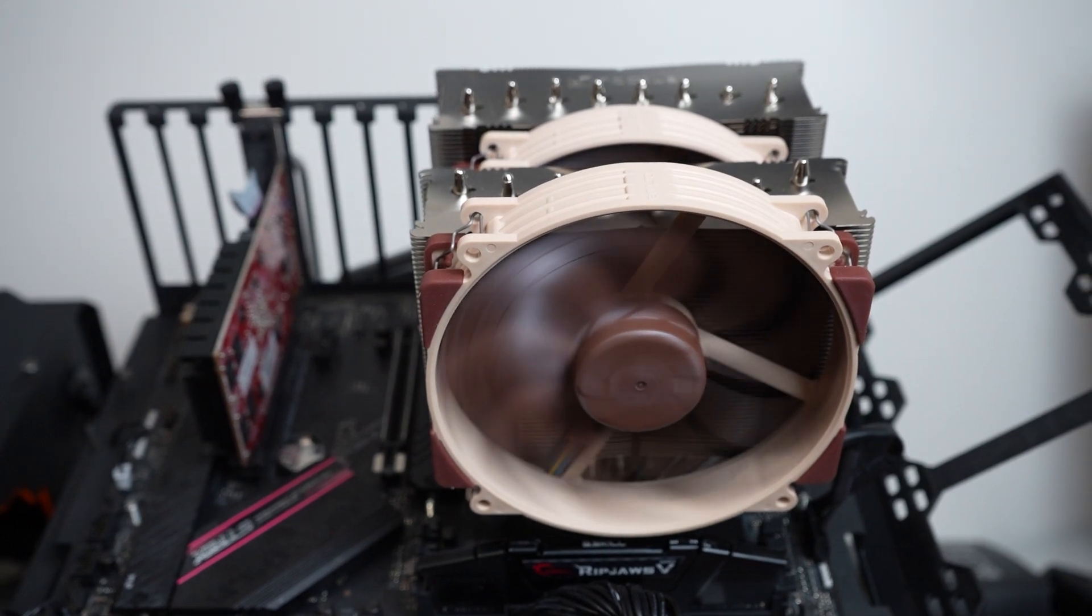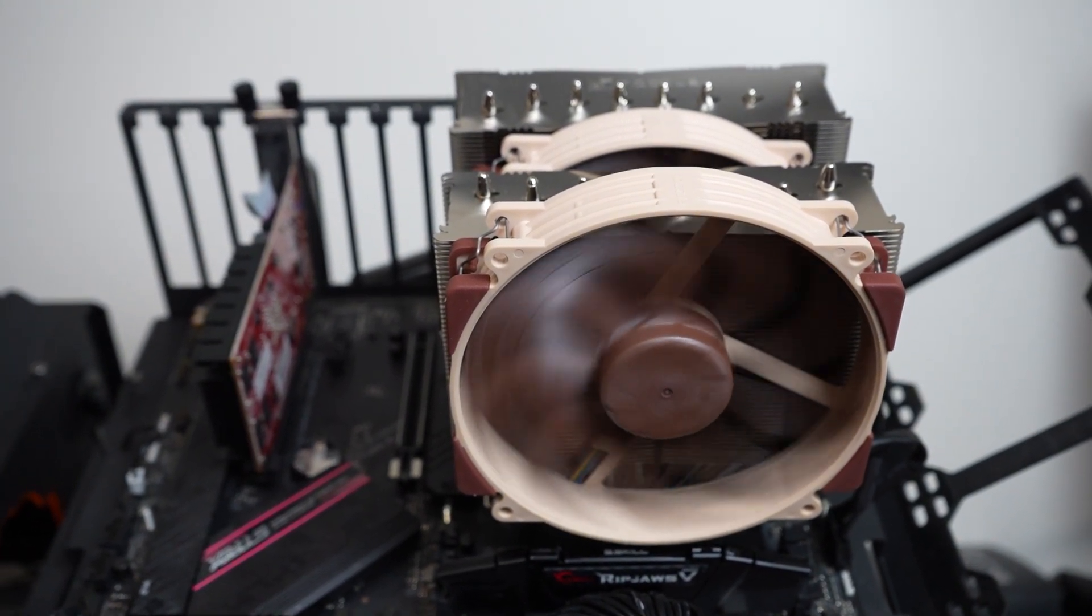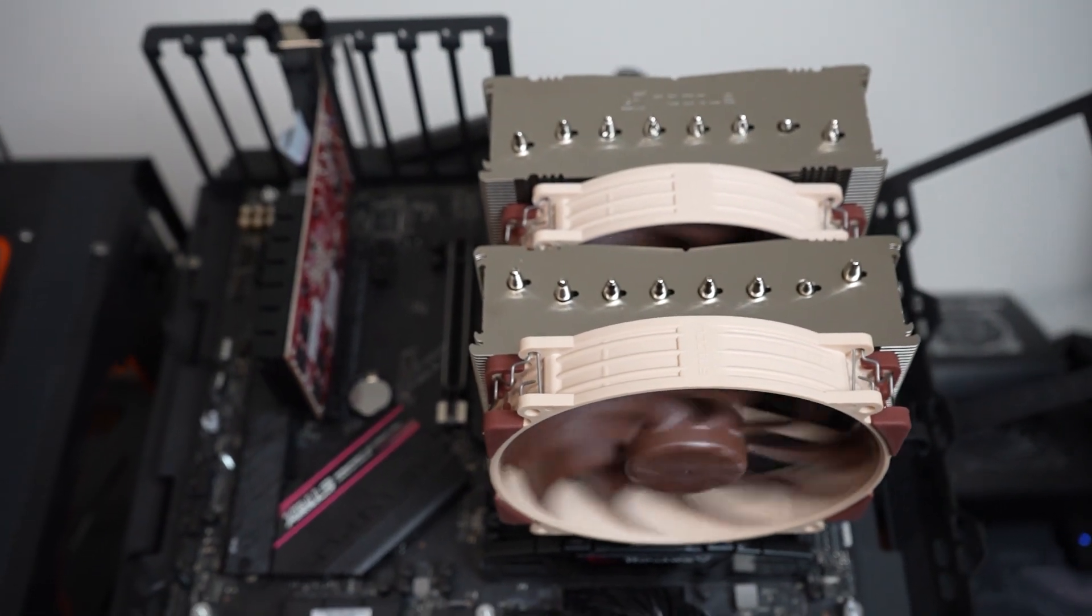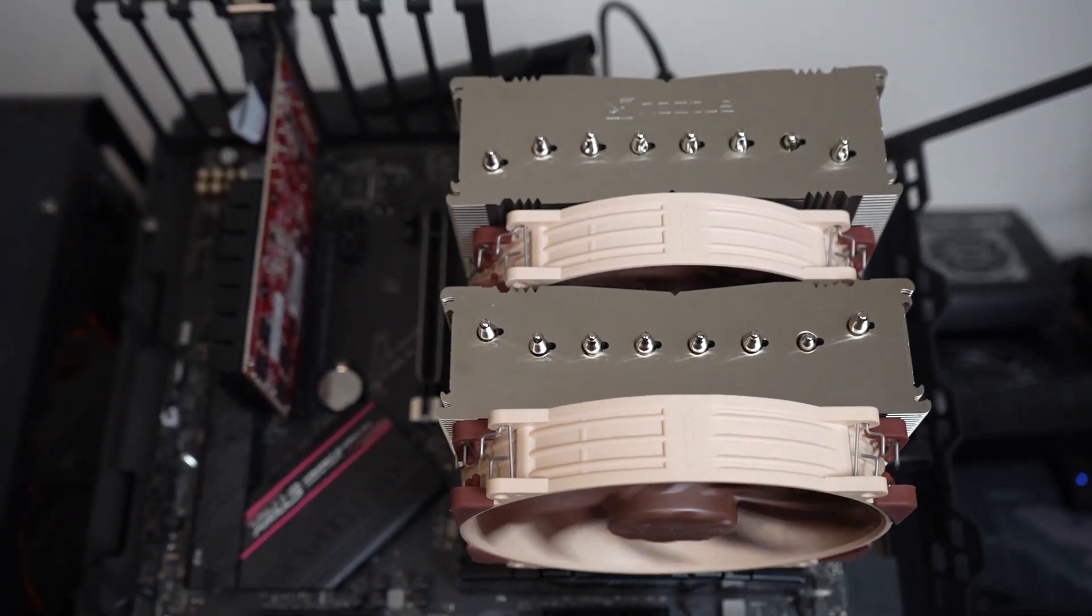Starting with the looks, the Noctua NH-D15-G2 offers the traditional Noctua look. Relative to other air coolers, this cooler is a monstrosity, but it doesn't disappoint regarding its cooling performance. This cooler has eight heat pipes, two large 140mm fans, and two heat sinks that are slightly different sizes.